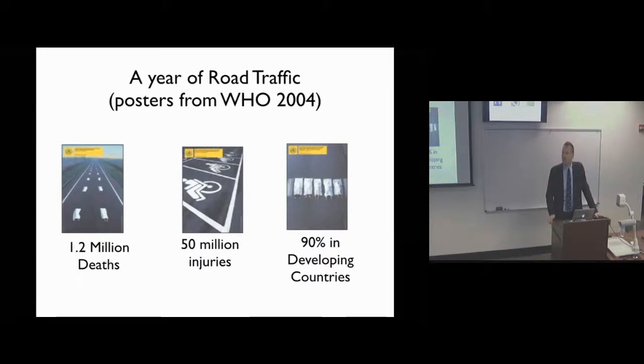They estimate 50 million disabling injuries. So take your death number and multiply it by 50, there's the disability. And here's the kicker: